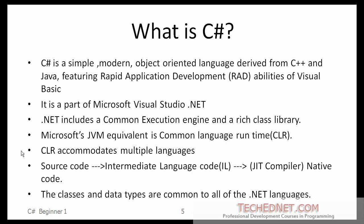CLR accommodates multiple languages. When you take source code written in any language — C#, VB, C++, etc. — it first gets compiled to intermediate language code. All of these languages get compiled to the intermediate language code. Then, when you run your application, it uses the JIT compiler, or just-in-time compiler, to compile it to native code.